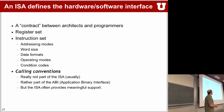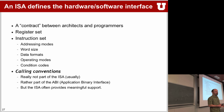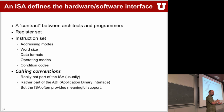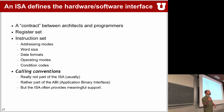The ISA is a contract between architecture and programmers. The major elements are the register set — very important — the instruction set itself, covering addressing modes, word size, data formatting, operating modes, and conditional codes, and the calling convention, which is technically part of the Application Binary Interface (ABI). A compiler must adhere to the ABI to write code properly, and features inside the ISA help make the ABI easier to implement.